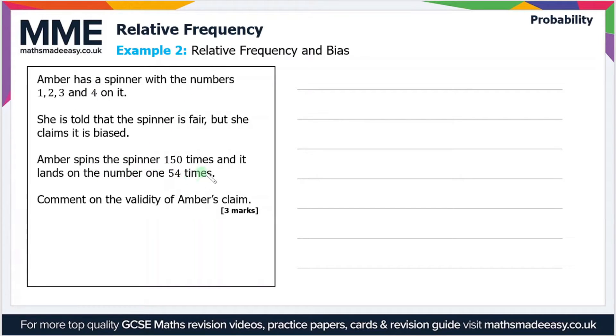Amber spins the spinner 150 times and it lands on the number one 54 times. Comment on the validity of Amber's claim. Okay, well if she's spun the spinner 150 times and it lands on one 54 times, then the relative frequency of landing on a one is 54 divided by 150. If you convert that to a decimal, that's 0.36.